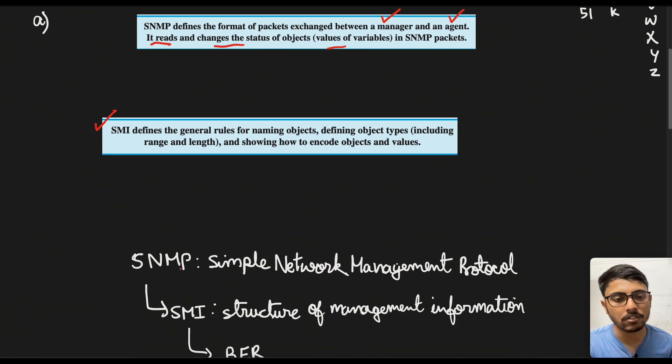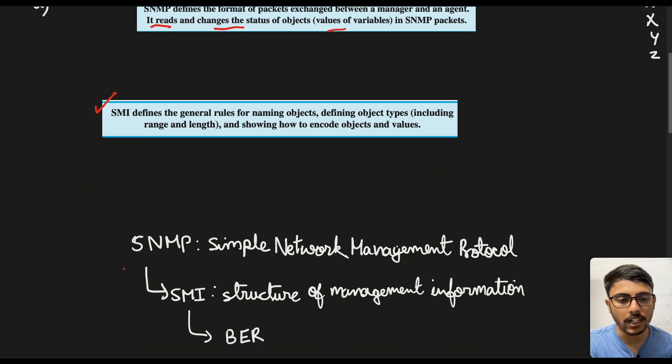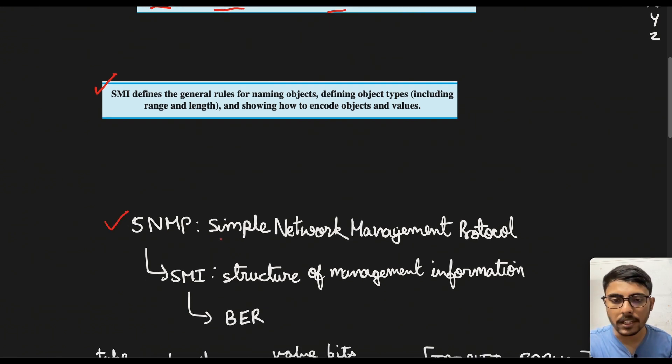So if we just summarize what we have learned so far, SNMP is basically Simple Network Management Protocol, a set of rules that we need to follow in order to transfer the data packets, and inside that the structure of this information which is being transmitted is handled by SMI.